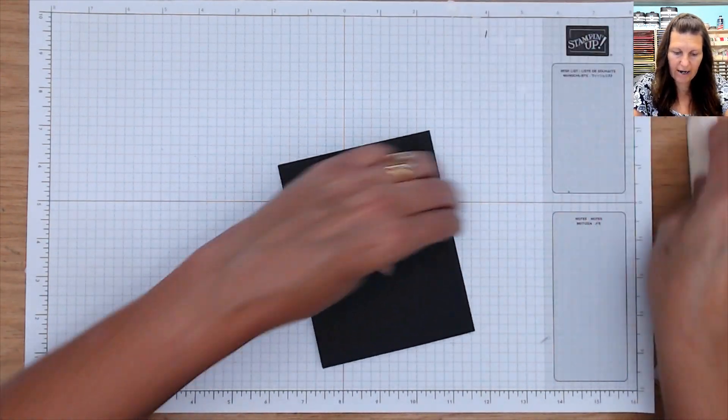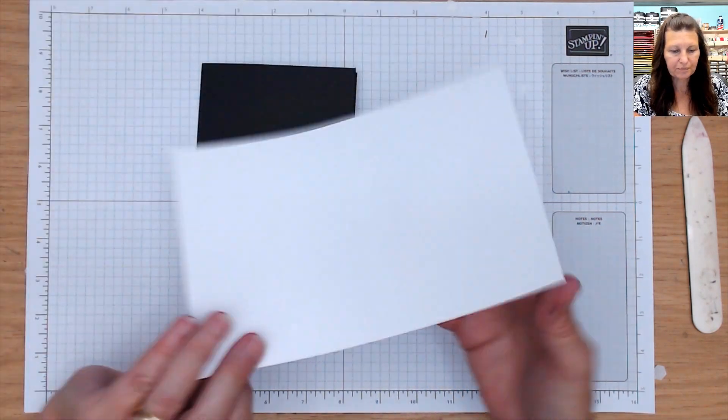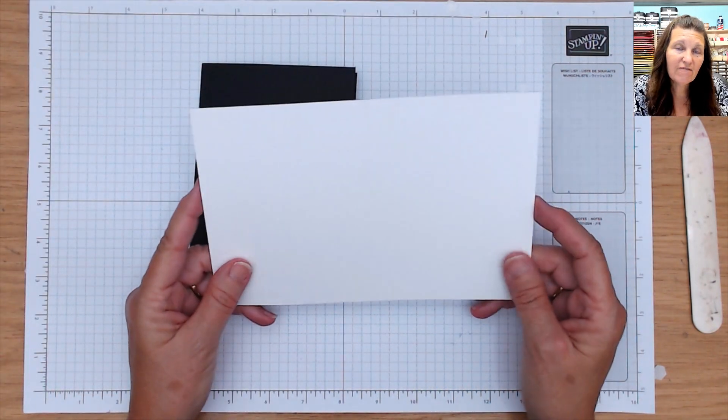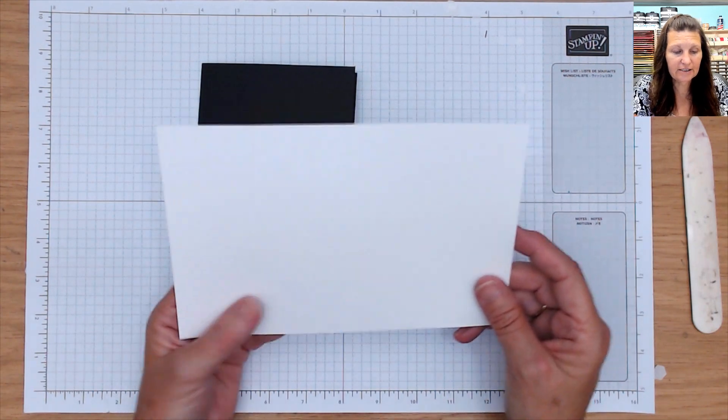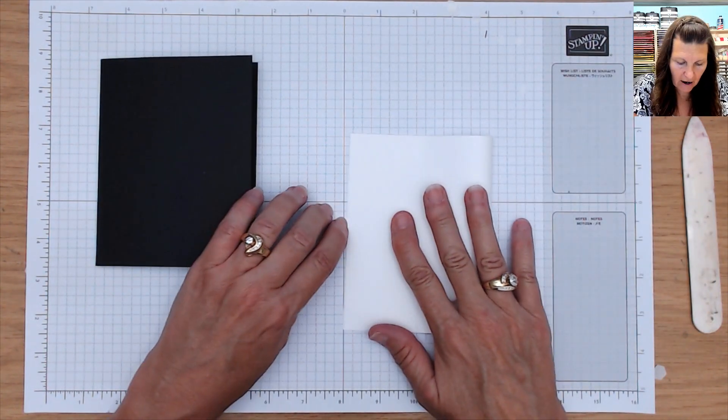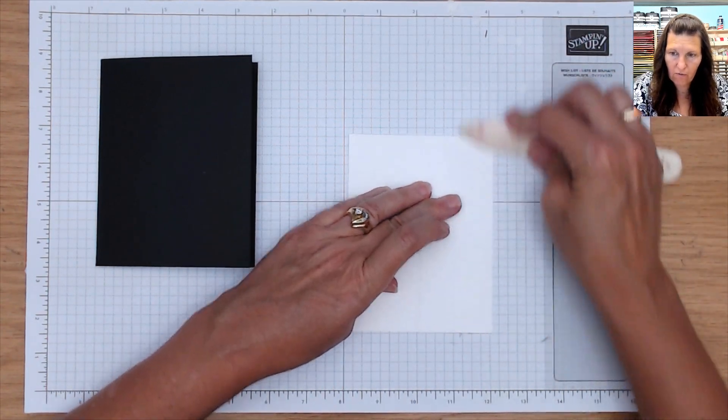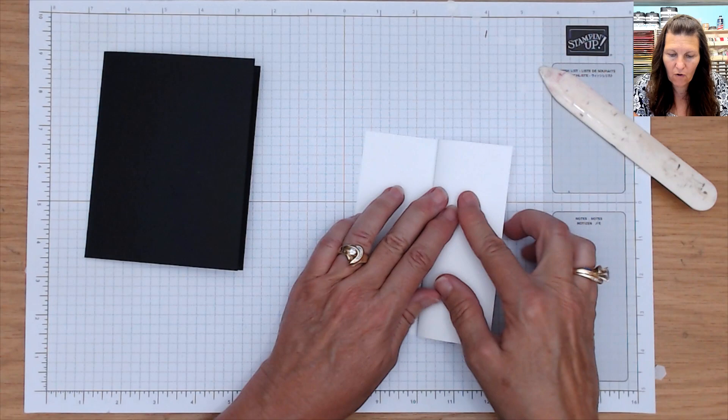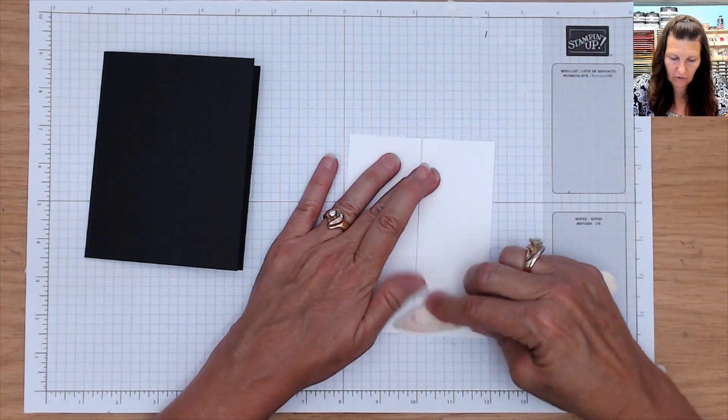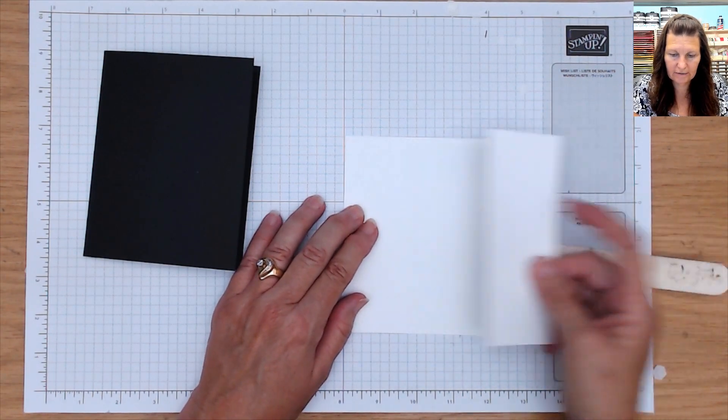And then I have a piece of white. And this is 5 1/4 by 8. And then it is scored at 4 and then at 6. So I'm going to fold in half, like so. And then we're going to fold this back. So it's like a Z-fold, but it's going to go in the opposite direction. We want it to go out like this.